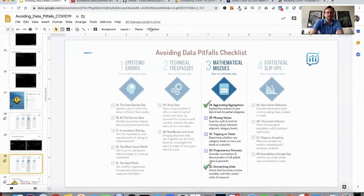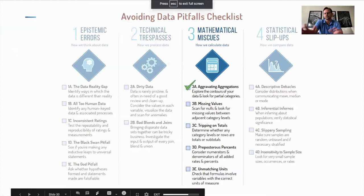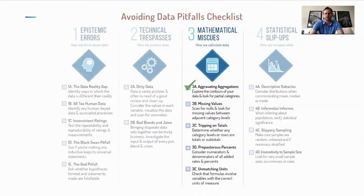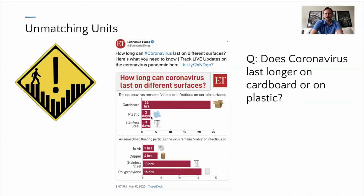Another pitfall: units. We can be working with miles and kilometers or pounds and grams and mix them up — this caused a Mars lander to crash in the late 90s. Here's an example with pandemic data from the Economic Times. Does coronavirus last longer on cardboard or plastic? Looking quickly, you'd say cardboard because the bar is so long. But cardboard is measured in hours, while plastic and stainless steel are in days — a three-to-one factor difference in favor of plastic. Easy to miss if you take a quick glance and move on.